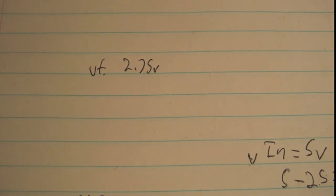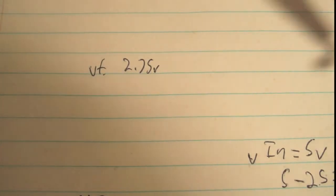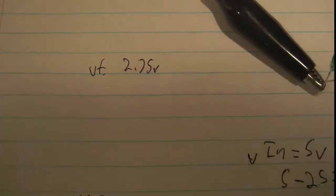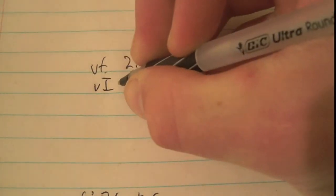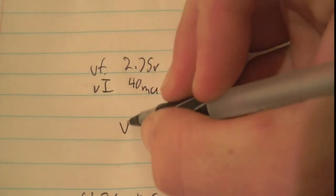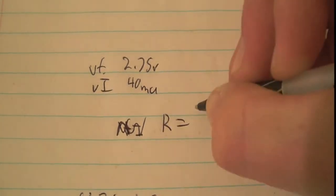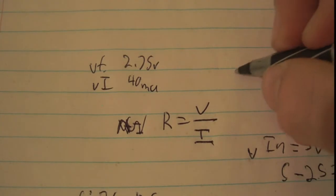So our current now is 40 milliamps, as you can see here, the LED is a bit brighter. So we're going to go with 40 milliamps as our forward current. We want to find our resistance equals to voltage over current, which is our Ohm's law.